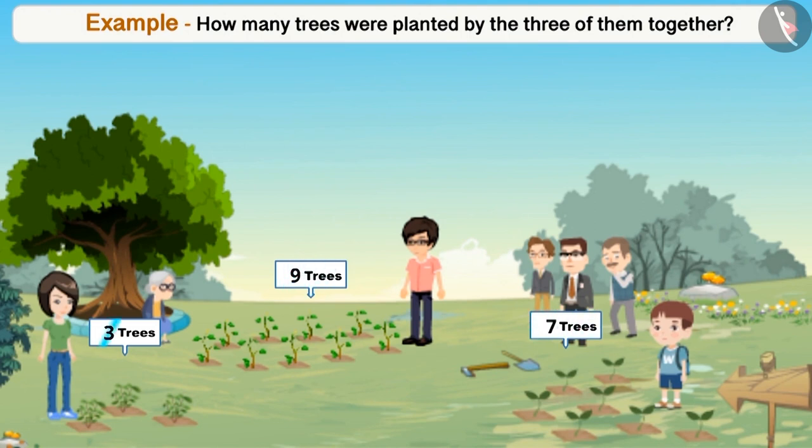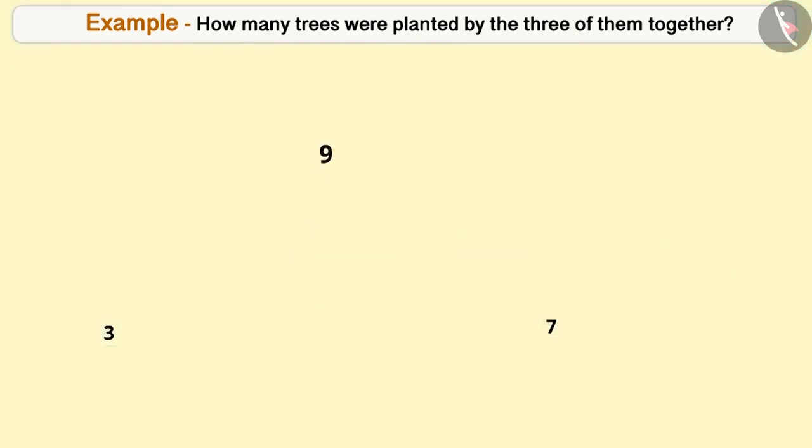To find the total number of trees planted by Akash, Ajay, and Babita, we need to add 9, 7, and 3. This can be solved by making a group of 9 and 7, the result being 19.